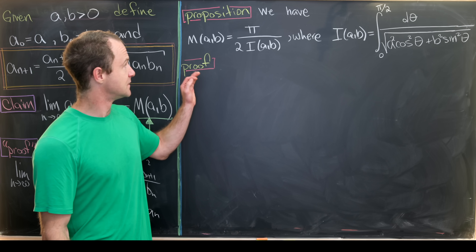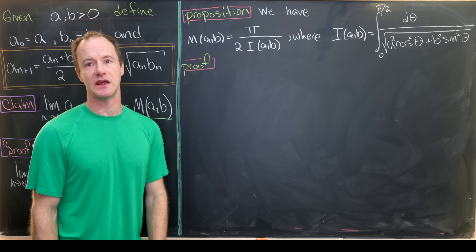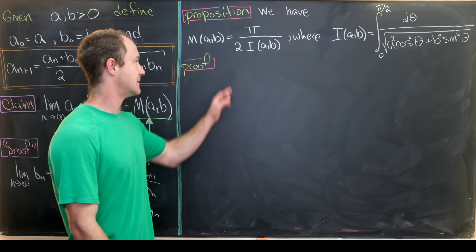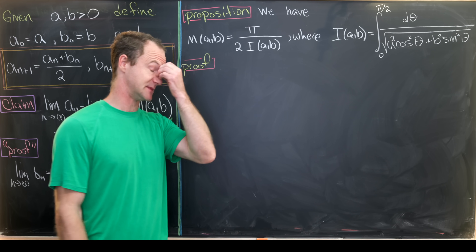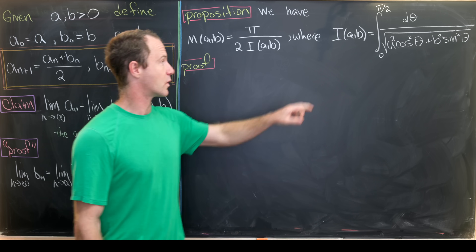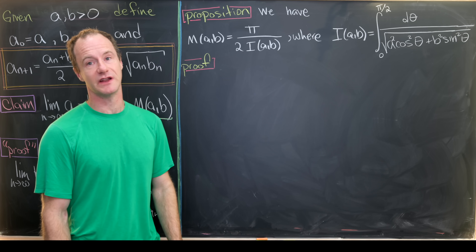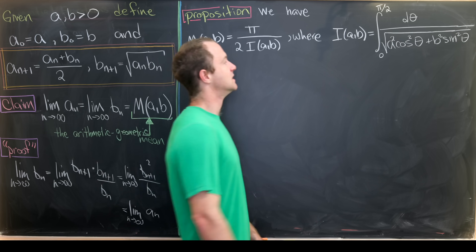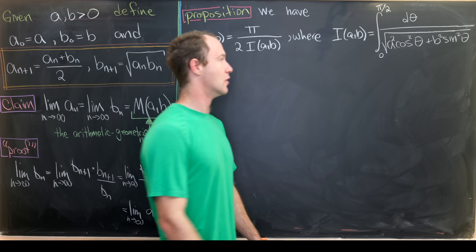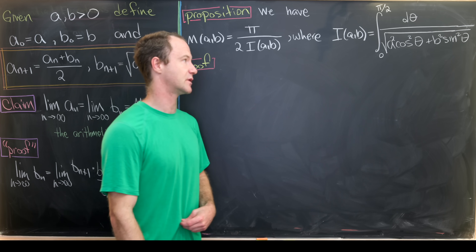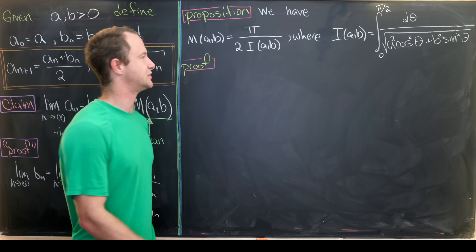Next, we'll show that the arithmetic-geometric mean M(a,b) is equal to π/2 times I(a,b), where I(a,b) is the two-parameter integral from 0 to π/2 of dθ over the square root of a² cos²θ plus b² sin²θ.